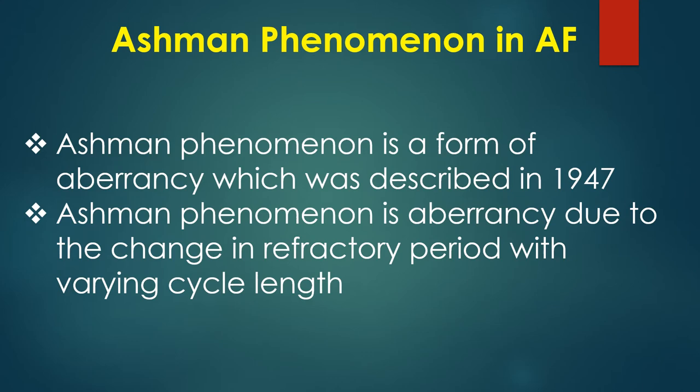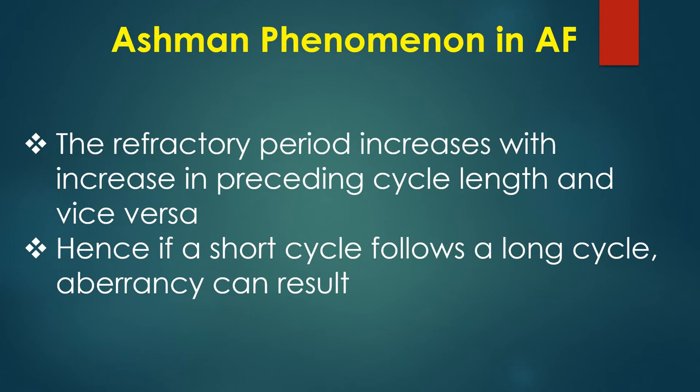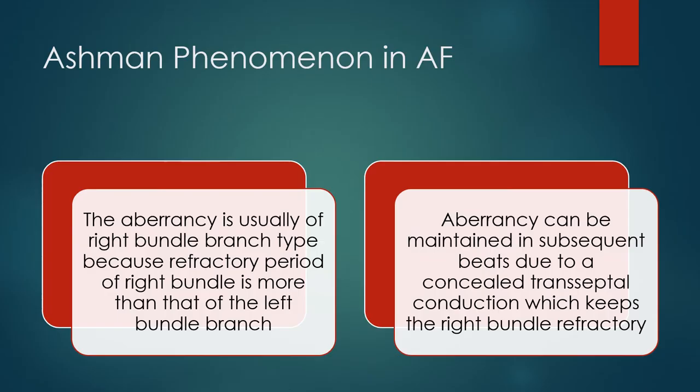Discussion on Ashman Phenomenon in atrial fibrillation. Ashman phenomenon is a form of aberrancy which was described in 1947. It is aberrancy due to the change in refractory period with varying cycle length. The refractory period increases with increase in preceding cycle length and vice versa. Hence, if a short cycle follows a long cycle, aberrancy can result. The aberrancy is usually of right bundle branch block type because the refractory period of the right bundle is greater than that of the left bundle branch.